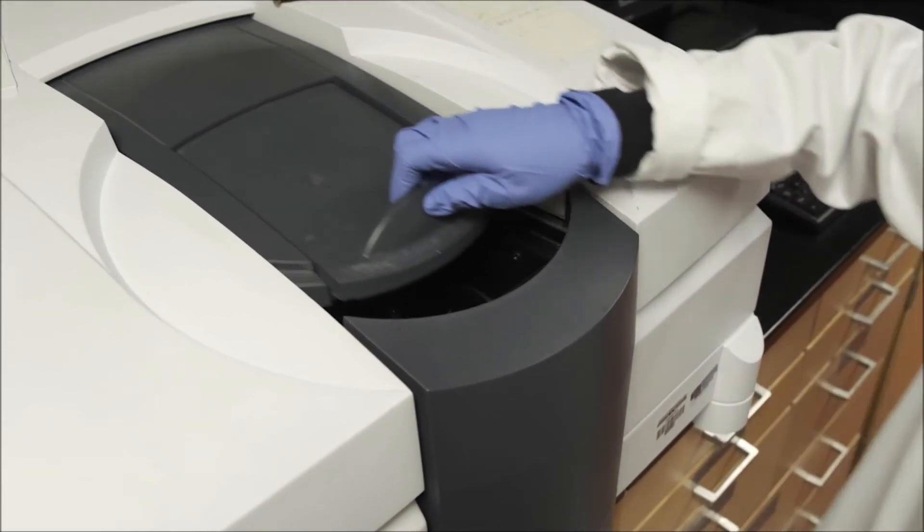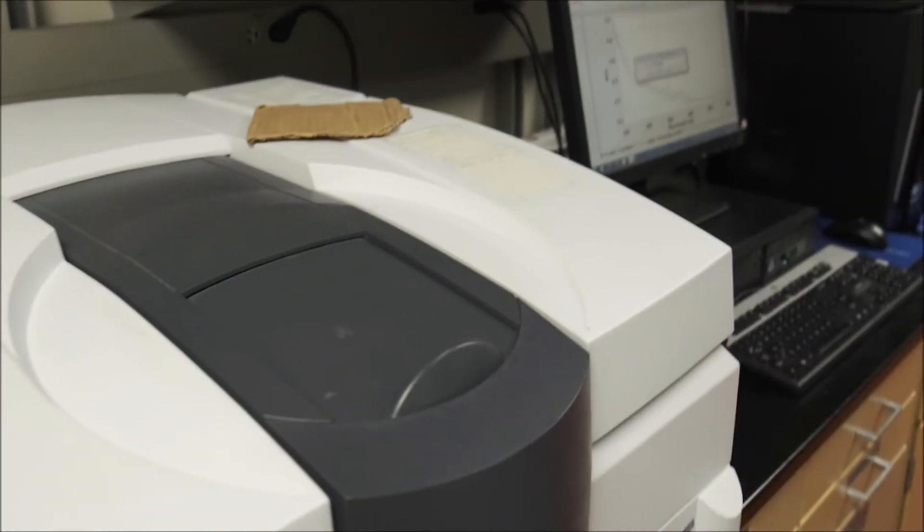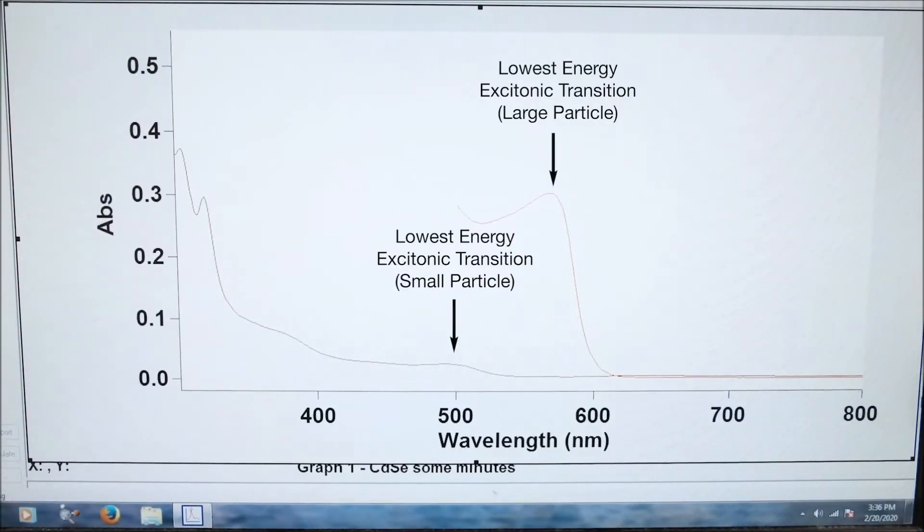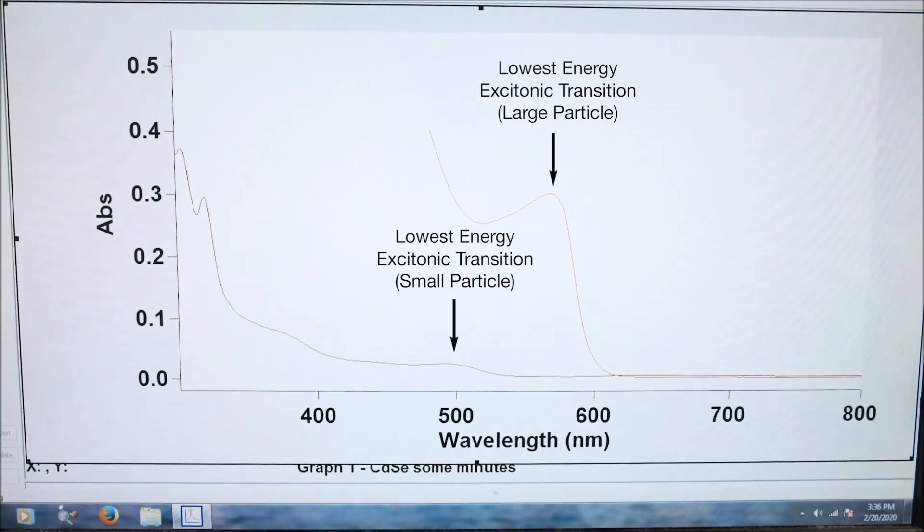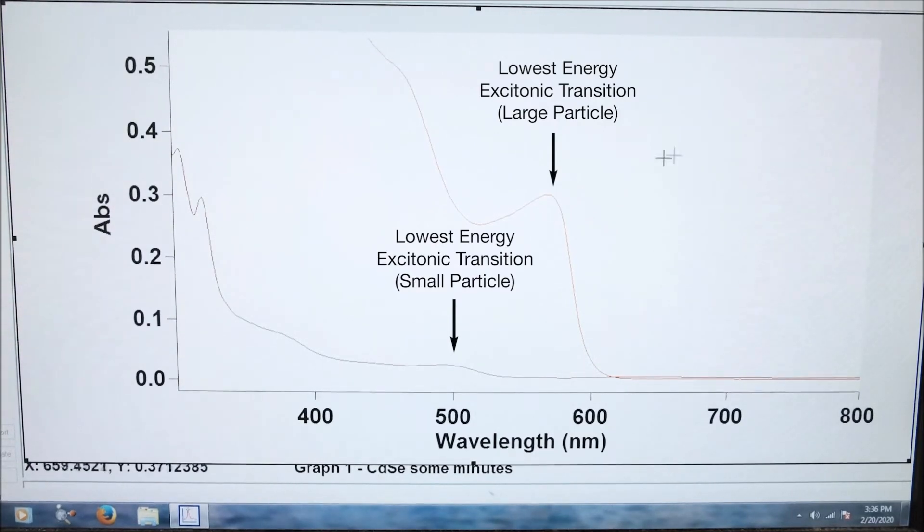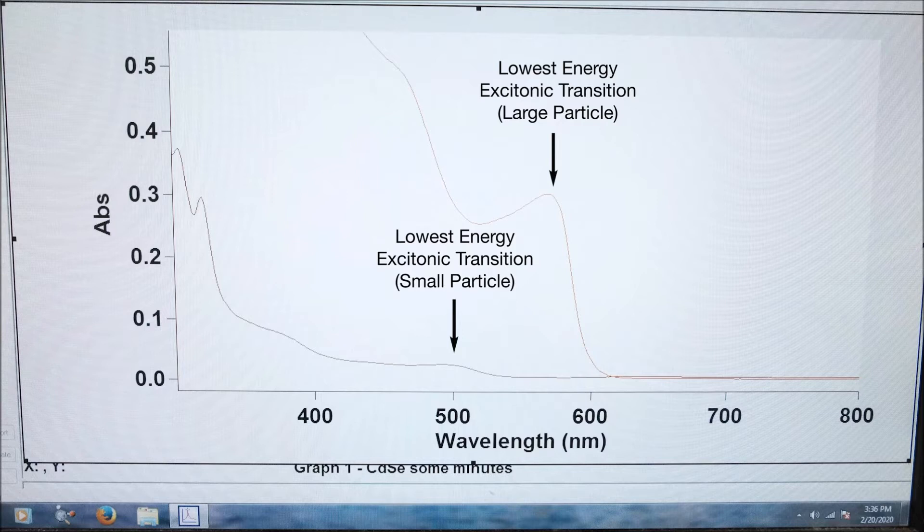These absorbance features can be measured by UV-Vis spectroscopy. This peak shows the lowest energy excitonic transition and corresponds to the bandgap energy of the semiconductor. Facile characterization of the optical properties is a major advantage because as the reaction progresses, the size of the quantum dots can be estimated by the wavelength of this peak.